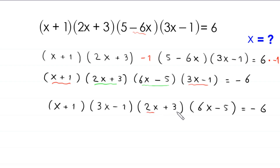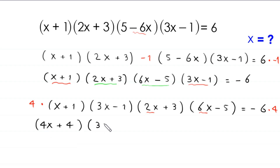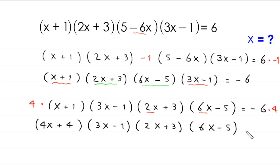If we multiply 2x by 6x we get 12x². So we multiply both sides by 4. On the right hand side, negative 6 times 4 becomes negative 24. On the left hand side we have (4x + 4)(3x - 1)(2x + 3)(6x - 5) = negative 24.